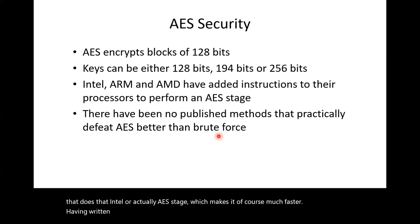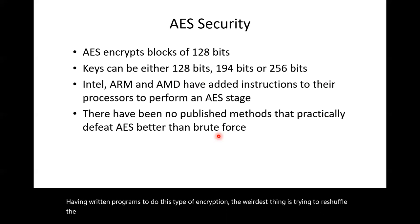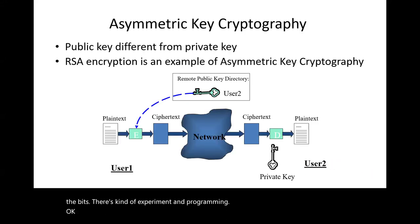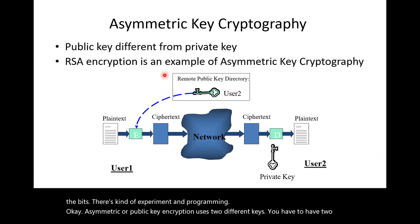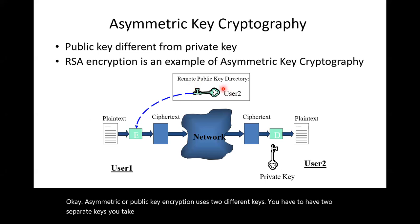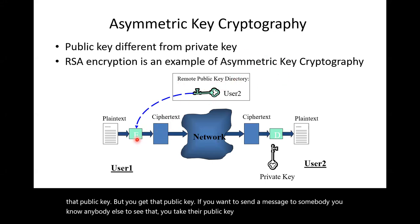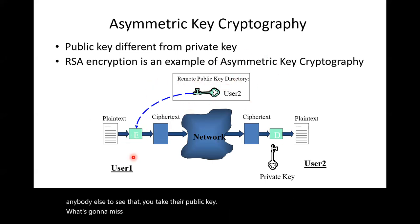Asymmetric or public key encryption uses two different keys. You have to have two separate keys. If you want to send a message to somebody and don't want anybody else to see it, you take their public key. Alice is going to send a message to Bob: she gets Bob's public key, encrypts the data with Bob's public key, and sends it across the network. Anybody might be able to see that, and they know Bob's public key, but because they don't have Bob's private key, they can't decrypt it. So Bob can decrypt it and get back the original message.